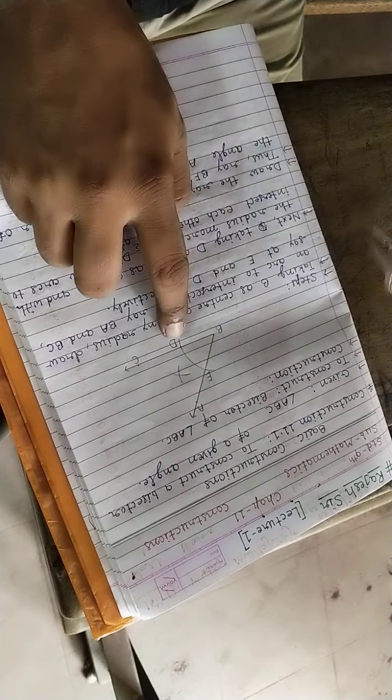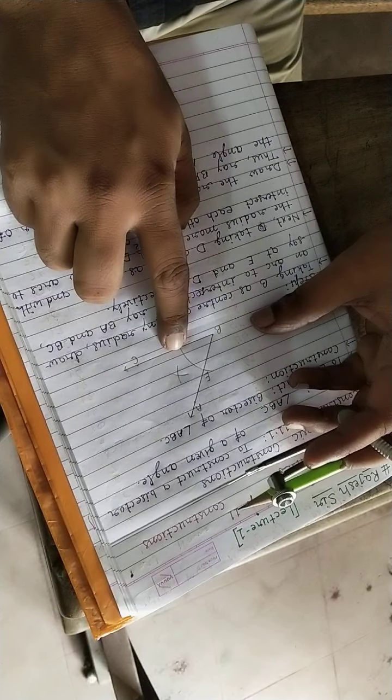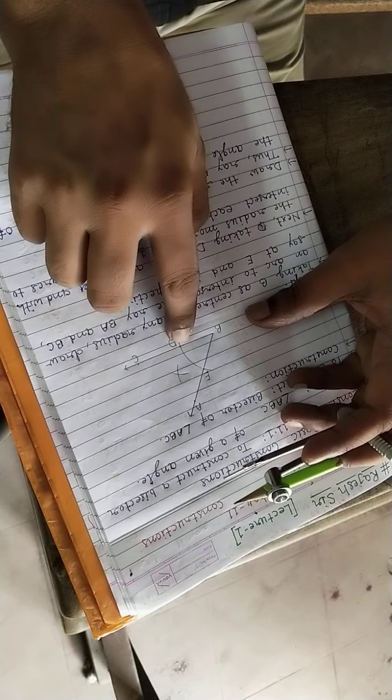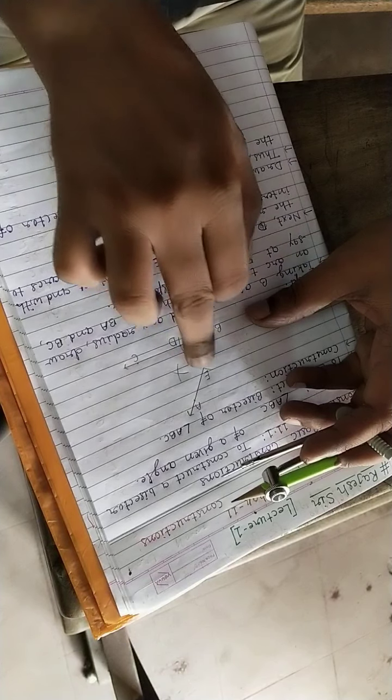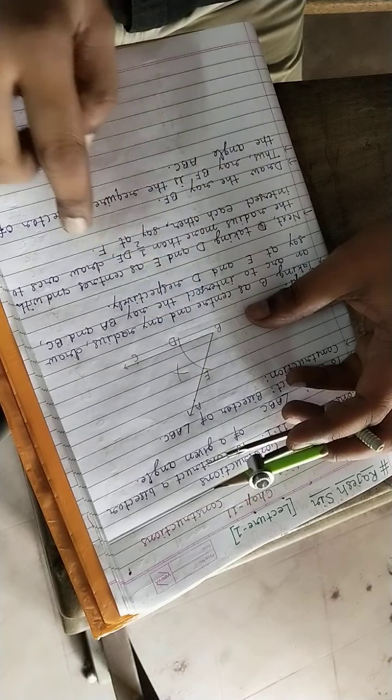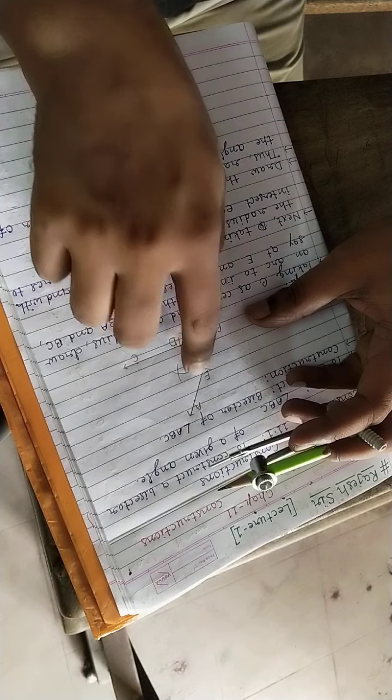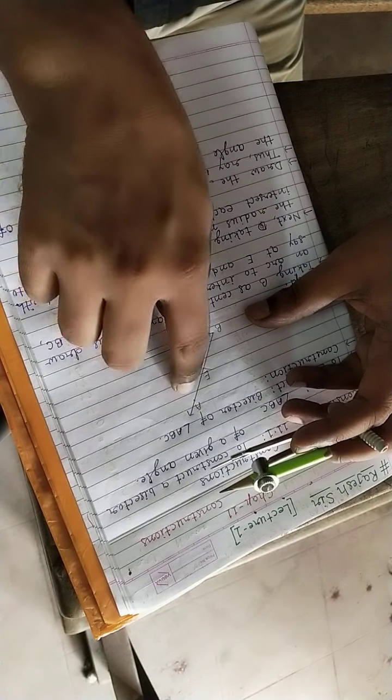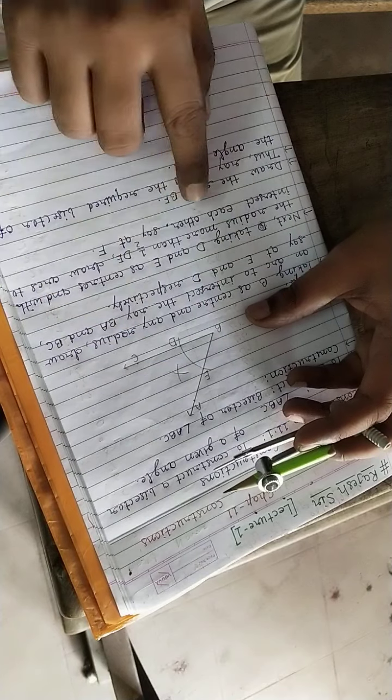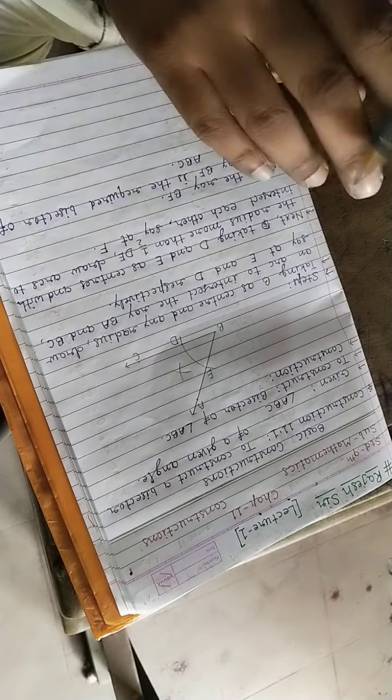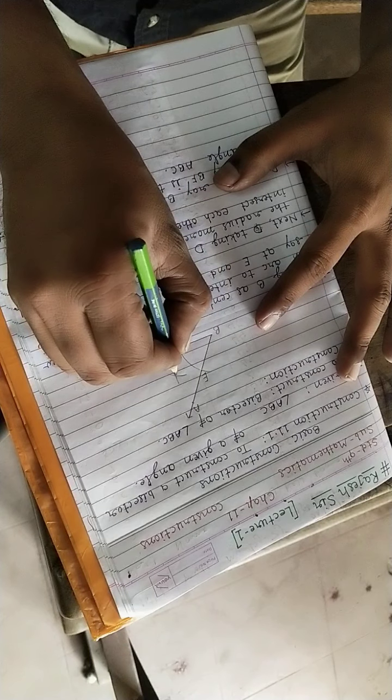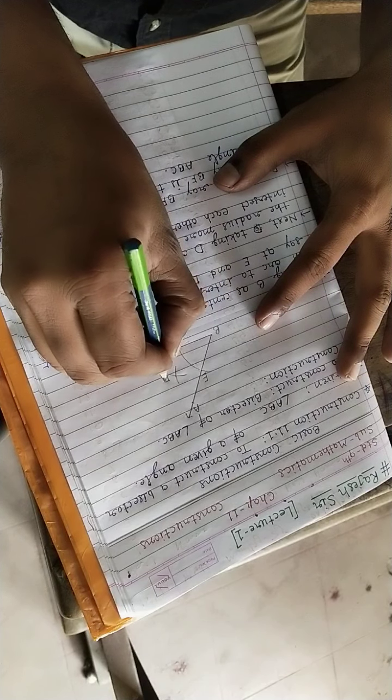What we have done: we have taken the rounder on D, center as D, and then we have taken the center as E, rounder on E. Both times we have taken the radius more than half of DE. We have drawn arcs that are intersecting each other. Say at F - wherever they are intersecting each other, call that point F.